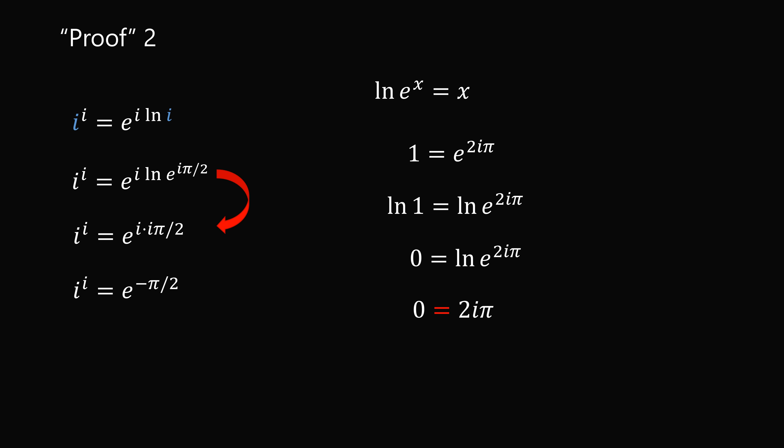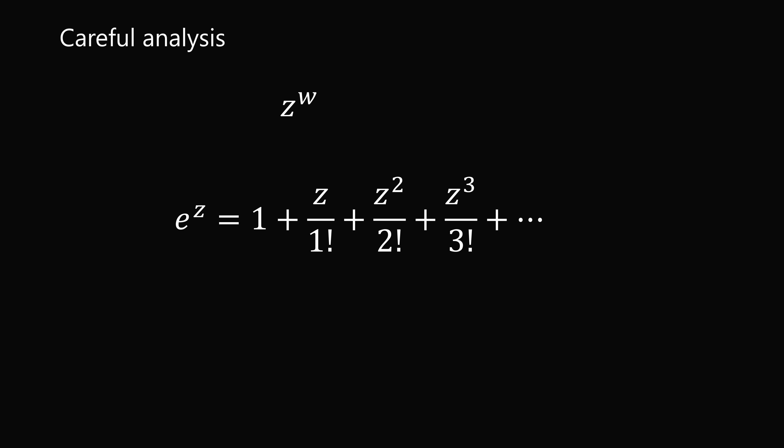So how are we supposed to calculate i to the power of i with a more careful analysis? We look at z to the power of w and ask: how do we define complex exponentiation? The trick is to rely on the power series definition of e to the power of z, which converges for all complex numbers z, and has the property that e^(u+v) equals e^u times e^v for all complex u and v. We can then define z to the power of w as e to the power of w times the natural logarithm of z. But now we need to define what the complex logarithm of z is.